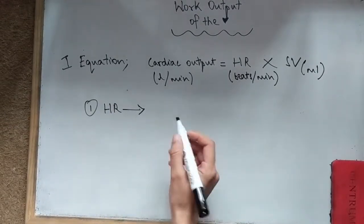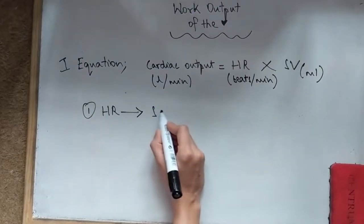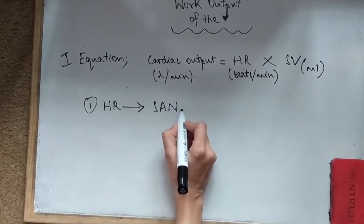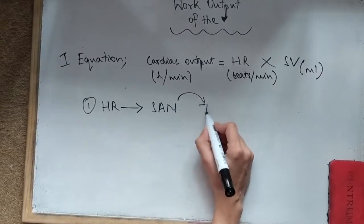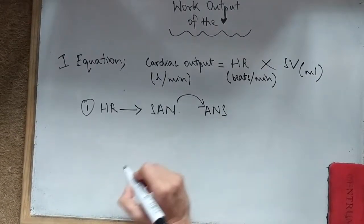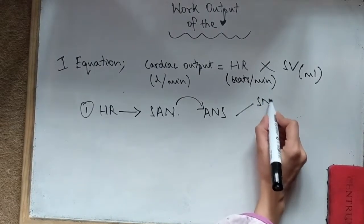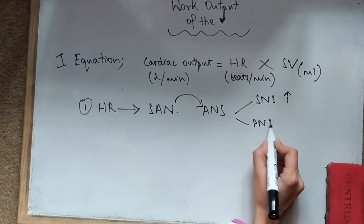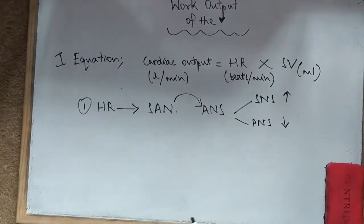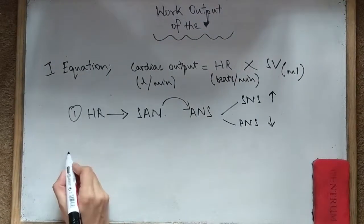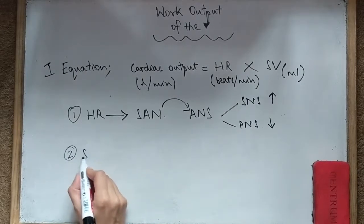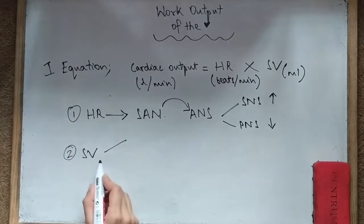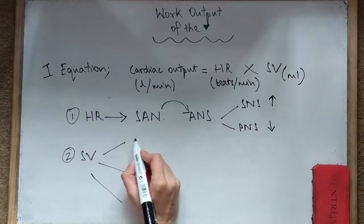We'll speak about each of them individually. Starting with the heart rate, it is established by the sinoatrial node in the right atrium, and this is dependent on the autonomic nervous system. The sympathetic nervous system increases it and the parasympathetic nervous system decreases it via muscarinic receptors.